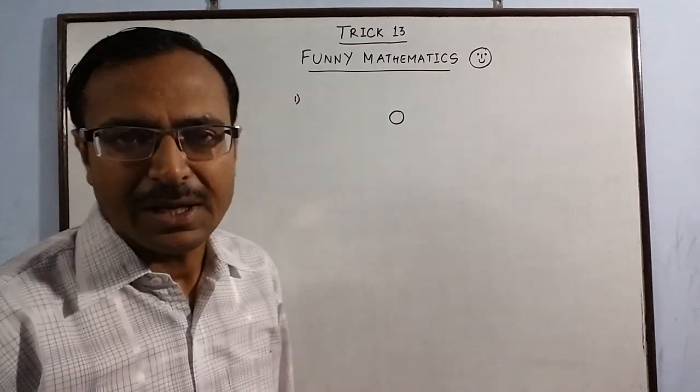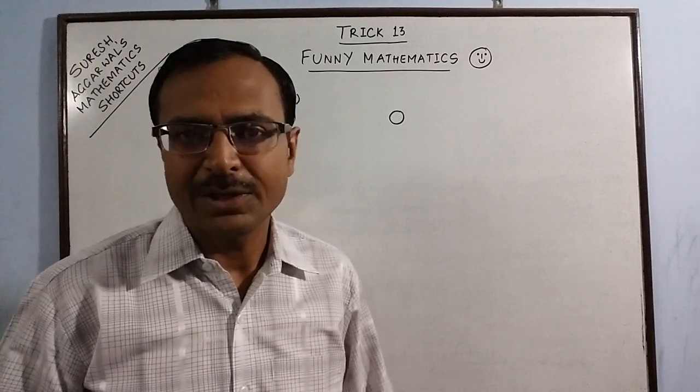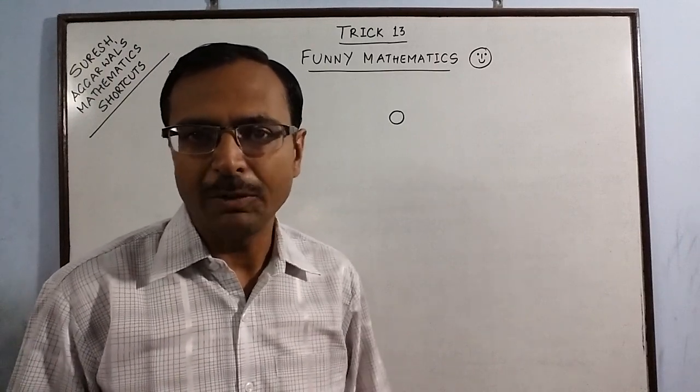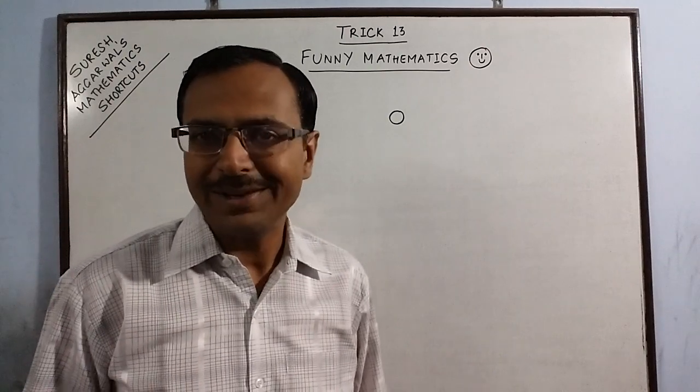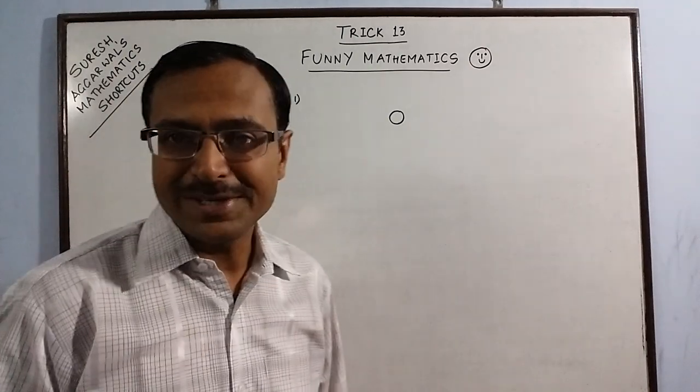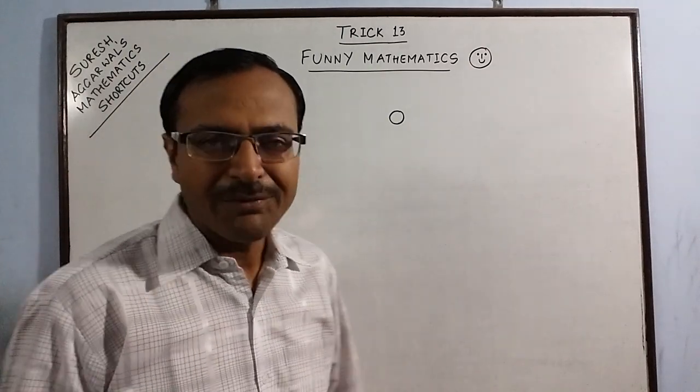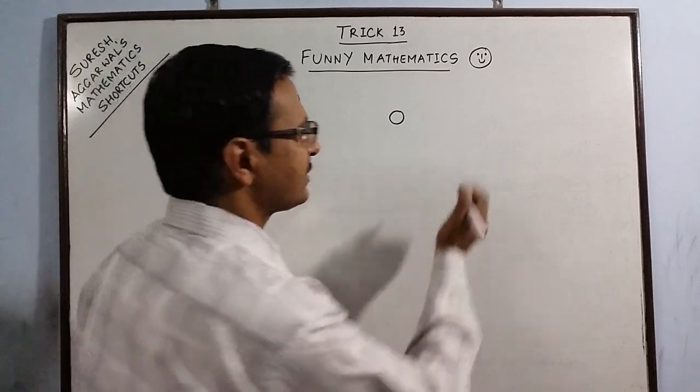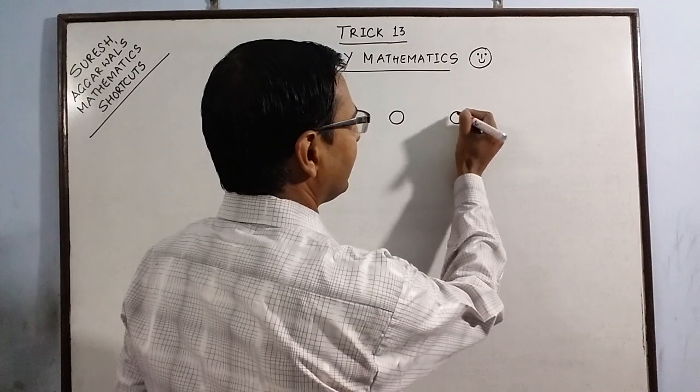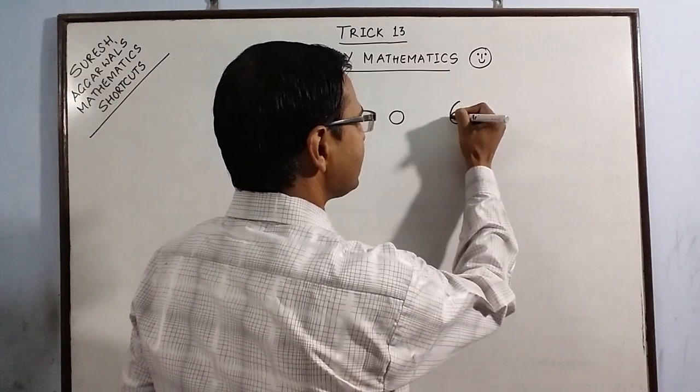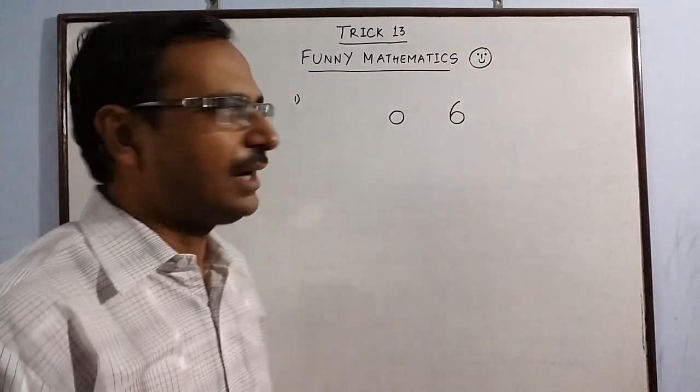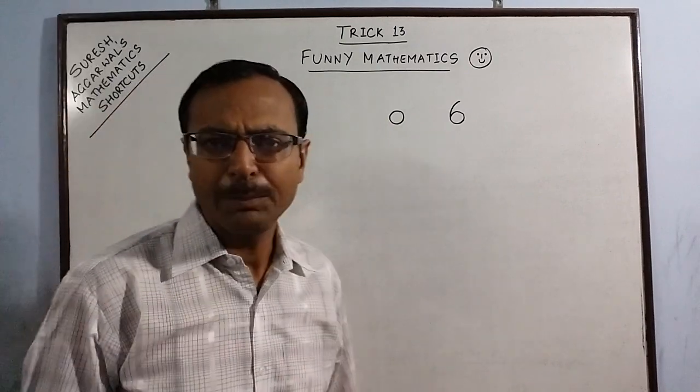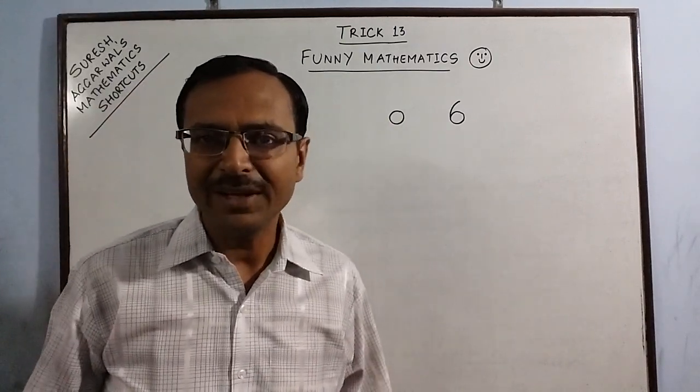So obviously, about 99% of the students will raise their hands. They will be eager to draw the six because it is very easy to make a six out of a zero. You can call one of the students and the answer you will get is they will simply draw a curved line and complete the six like this. Pretty easy, right? But what's the fun in this?